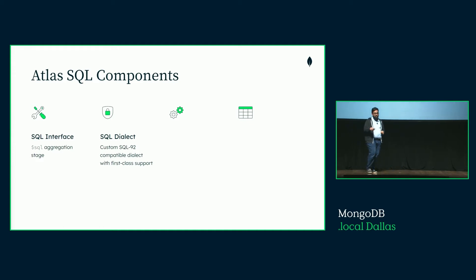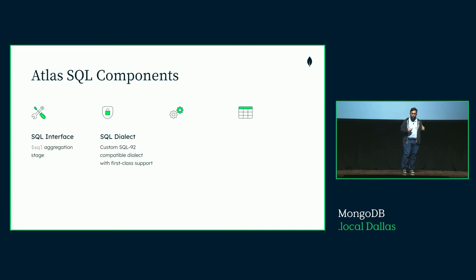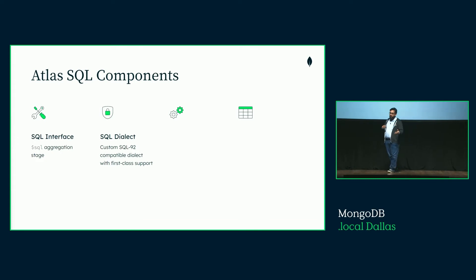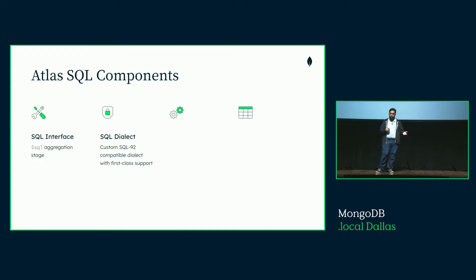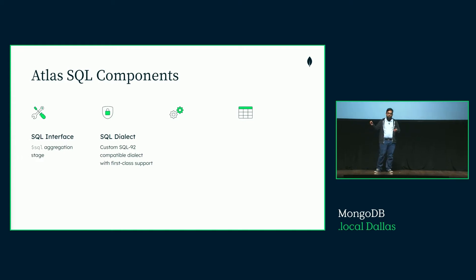The next component is the fact that the SQL dialect is actually a custom SQL 92 compatible dialect, which has now become a first-class citizen of our product suite. This means there is no more having to convert things between relational data formats and Mongo's document format, no more having to unwind and remove the complexities of data that exists in the document model — which is really nice because you can use arrays and retain those advantages without losing them in the relational model.